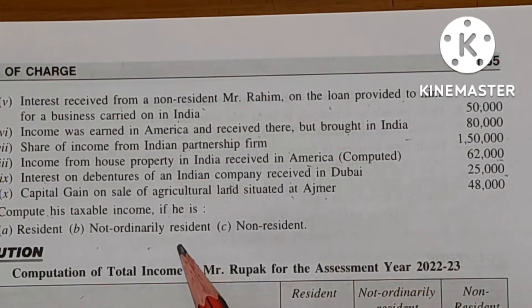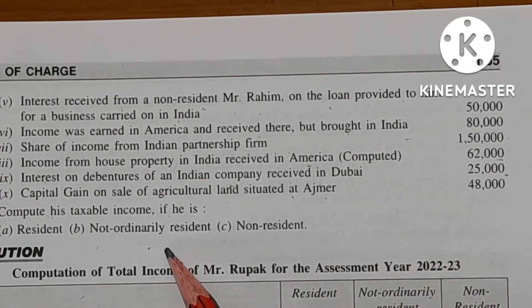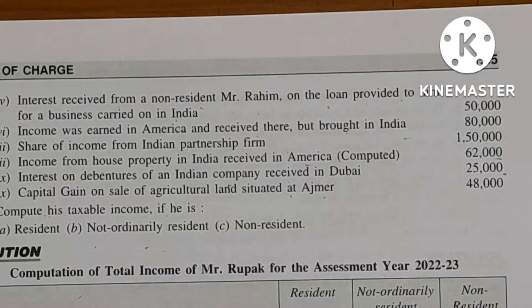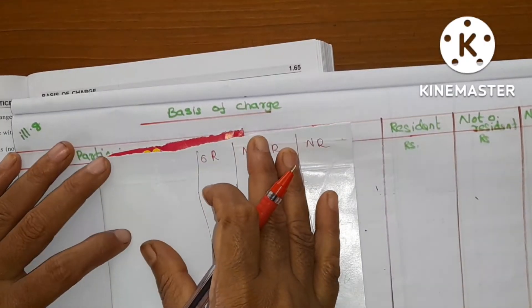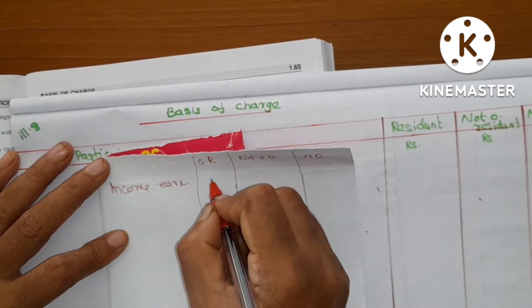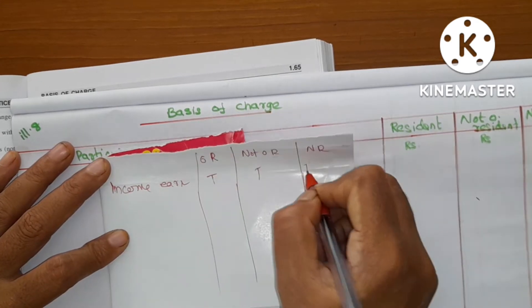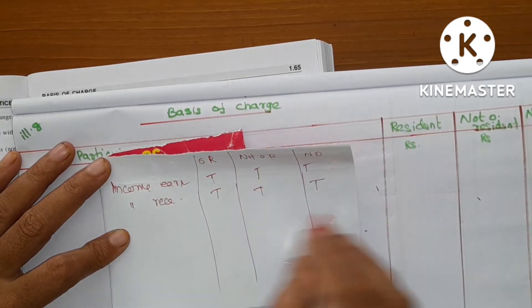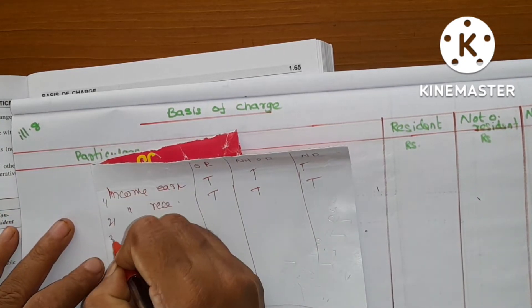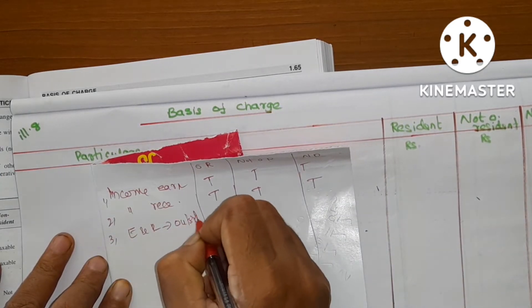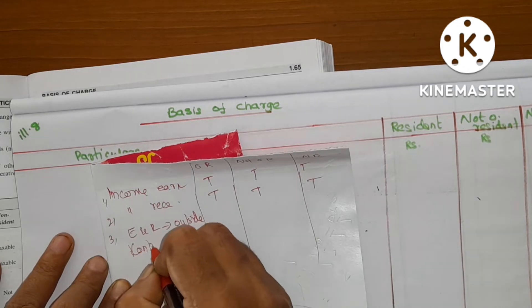So we have the chart with three columns: resident, non-resident, and ordinary resident — RR. The income earned in India is taxable in all cases. The cases include: ordinary resident, not ordinary resident, non-resident. The first case, second case, third case — earned and received outside India. Control: India.